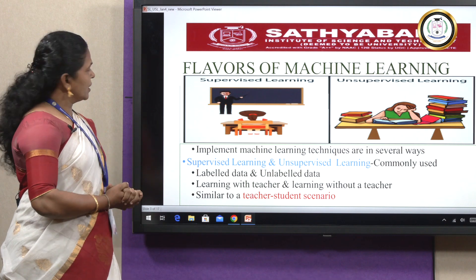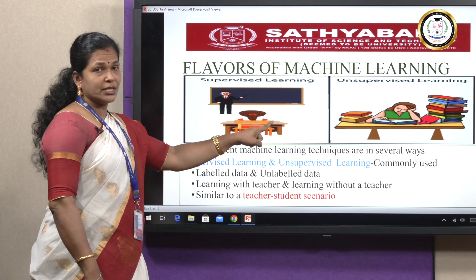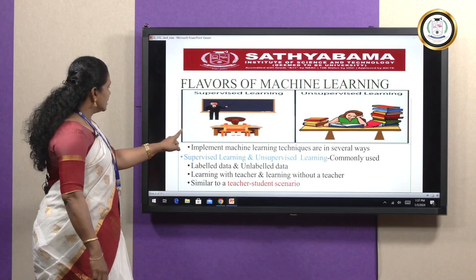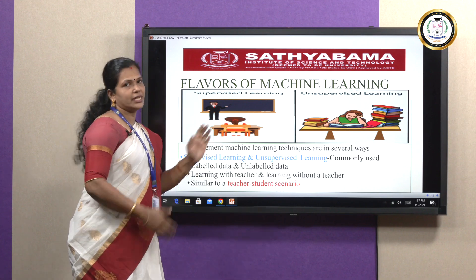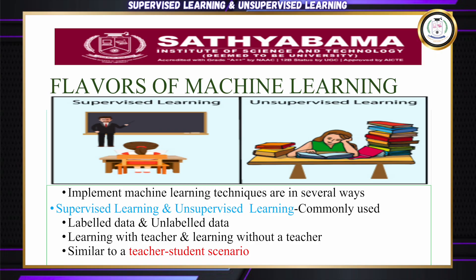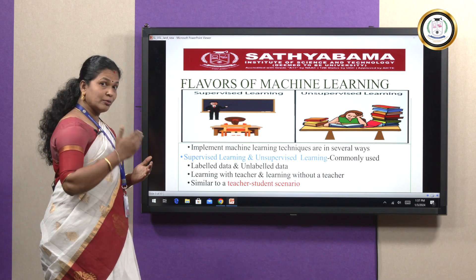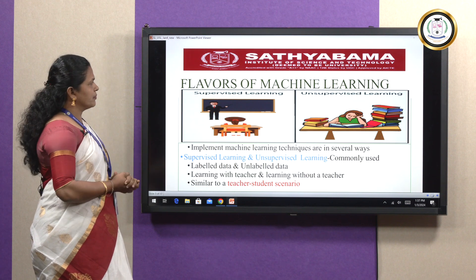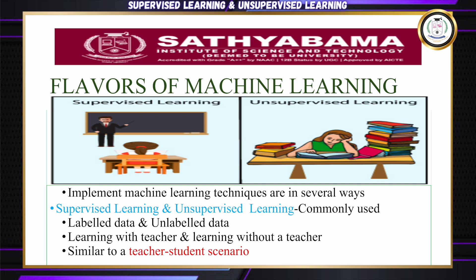In supervised learning, the machine learns from labeled data. In unsupervised learning, the machine learns from unlabeled data. Supervised learning is learning with a teacher, and unsupervised learning is learning without a teacher. This is similar to a teacher-student scenario, where a teacher helps the student learn from books and materials, while in unsupervised learning, the student studies by herself from books and materials.